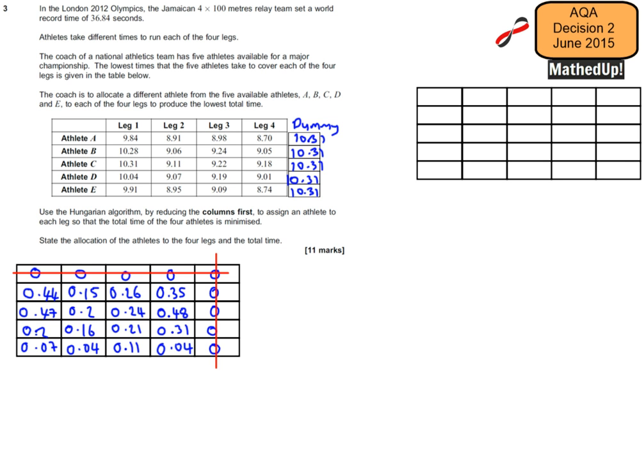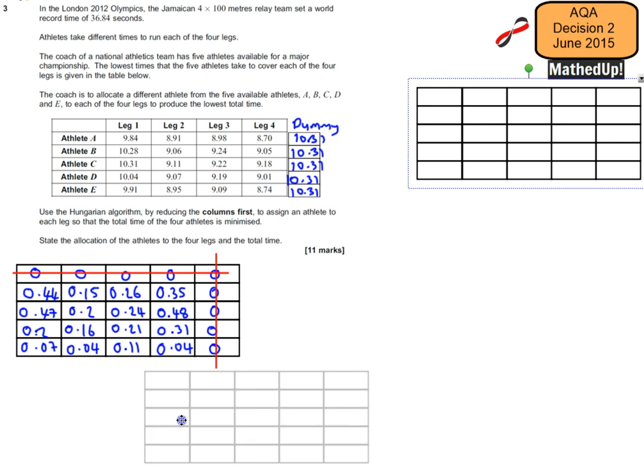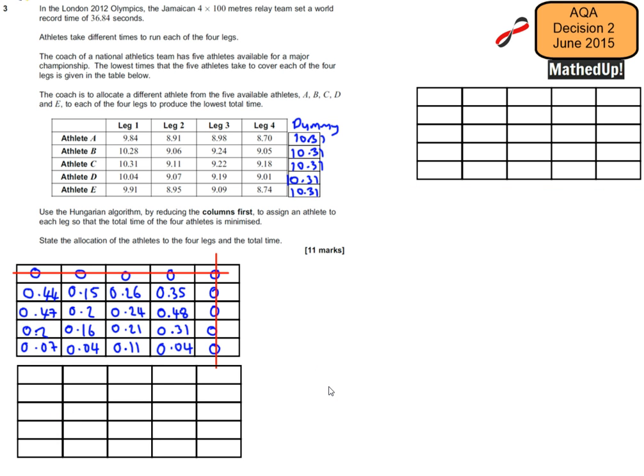Now, the algorithm tells us that what we now need to do is we need to find the minimum value in this table here that's left, that isn't covered. And we add that on to any cell where the lines overlap each other and we subtract it from any cell that is uncovered and the remaining ones remain the same. So my minimum value is going to be 0.04.